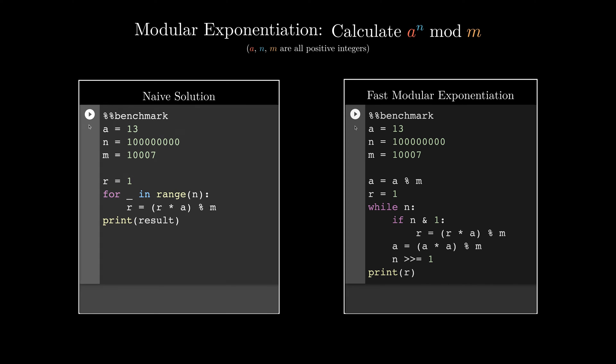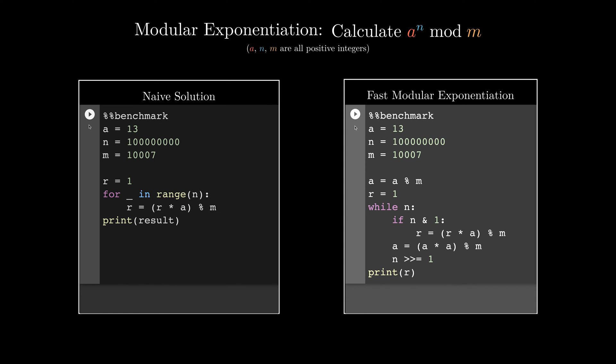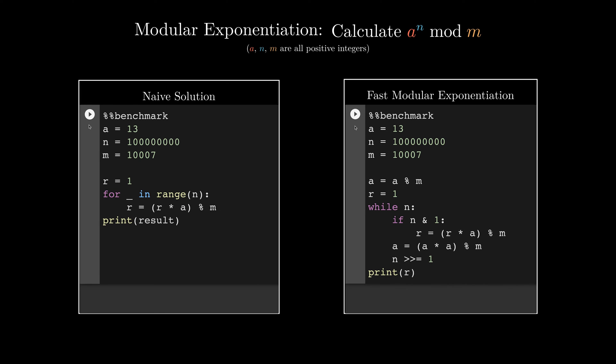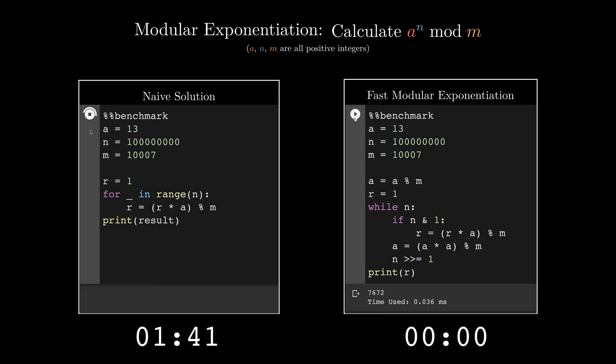On the left is the Python implementation of the naive algorithm, and on the right is that of the fast algorithm. We will calculate 13 to the power of 100 million, then mod 1007. Let's start the programs. Both programs finished running. We can see both programs calculated the correct answer, which is 7672. But the naive algorithm took 12.6 seconds, while the fast modular exponentiation algorithm only took 36 microseconds.